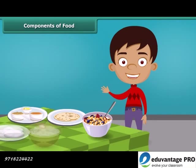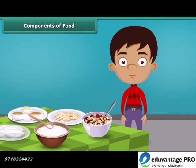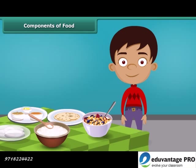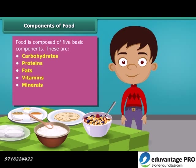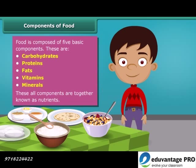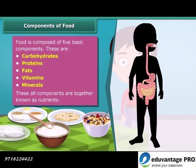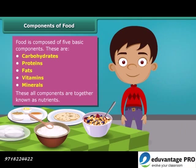A question may arise: how do we get energy by eating food and why is food known as fuel for our body? Friends, food has five basic components: carbohydrates, proteins, fats, vitamins, and minerals. All these components together are called nutrients. A body digests food and absorbs these nutrients to provide energy, and some nutrients help us fight against diseases.